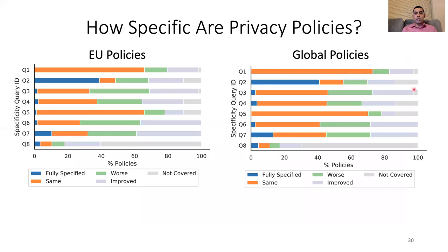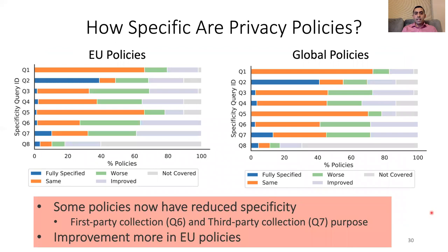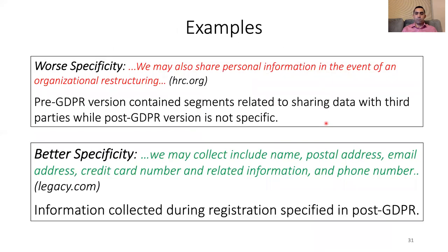This chart shows how specificity changed after the GDPR. We find that a significant portion of policies are less specific — especially for queries Q6 and Q7, which cover first-party collection and third-party sharing. We hypothesize that policies attempted to be more inclusive of their practices at the cost of being less specific. For example, HRC.org's pre-GDPR version included specific types of data shared with third parties, while the post-GDPR version only mentions 'personal information.' Other policies, such as legacy.com, have become more specific.